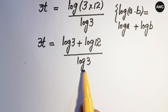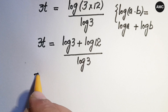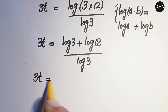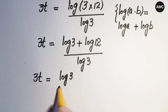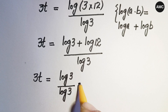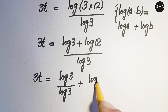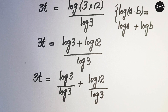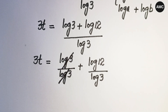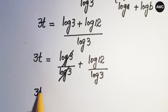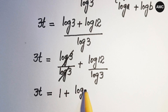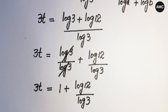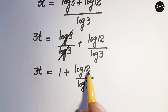Writing log 3 separately under each term, we get 3t equals log 3 over log 3 plus log 12 over log 3. This log 3 cancels with log 3, so 3t is equal to 1 plus log 12 over log 3.